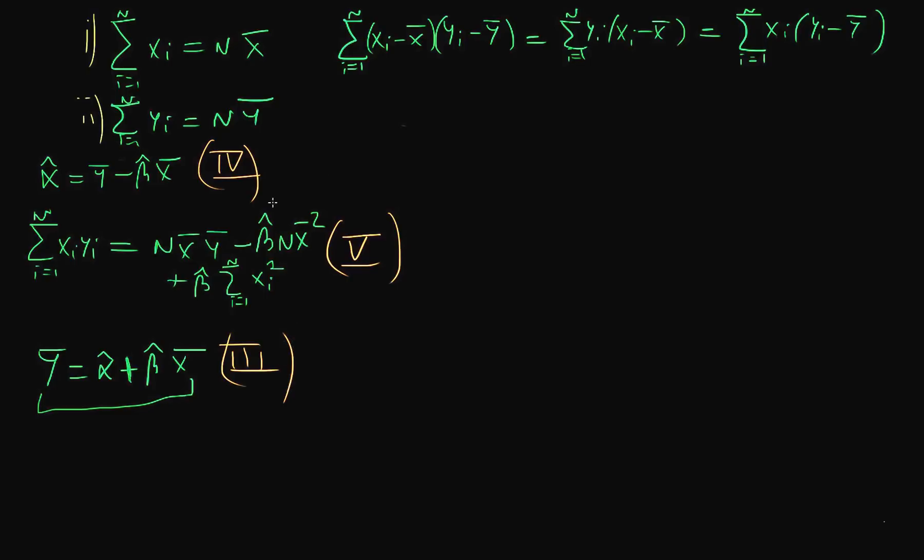I've written out all the conditions we need along here. We can use condition 5. We can take the n x bar y bar over to the other side and that's equal to the sum of i equals 1 to n of xi yi minus n x bar y bar, and that's equal to beta hat open brackets the sum of xi squared from i equals 1 to n minus n x bar squared.